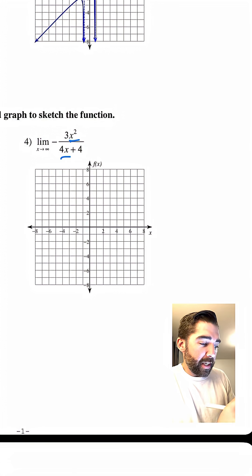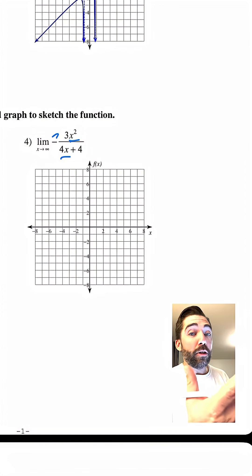Okay, how about this one? This exponent is bigger than this exponent. So that means we are going to grow at a greater rate. But don't forget about this negative, okay?